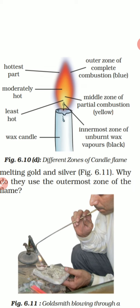The first, outermost zone: there is complete combustion and it is of blue color. When there is complete combustion, it is blue. The outermost zone is the hottest part. Then the middle zone: there is partial combustion, it is of yellow color, and it is moderately hot.